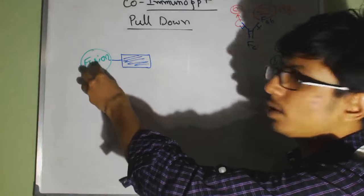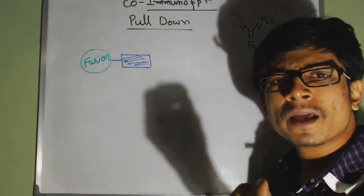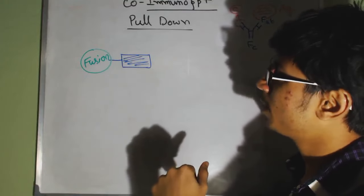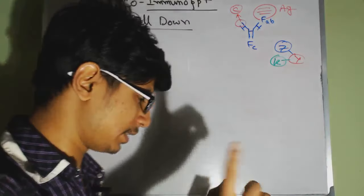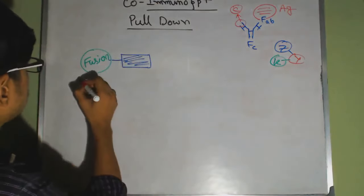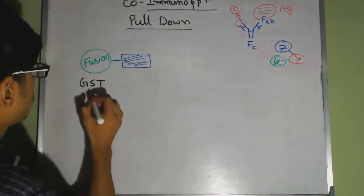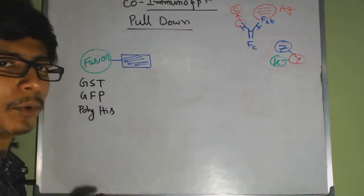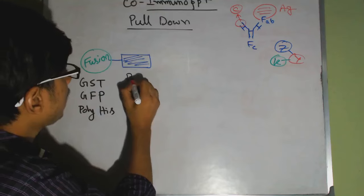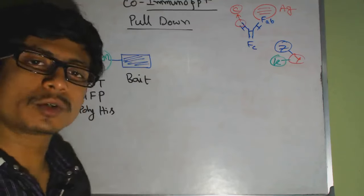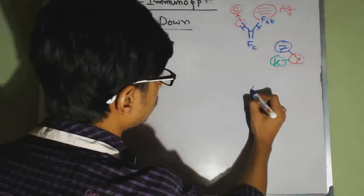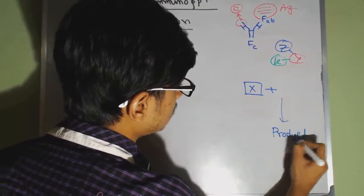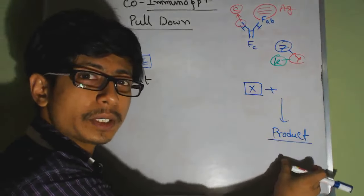After precipitation and gel electrophoresis, we can detect the proteins due to the tag on the fusion protein. Tags can be radioactive labels, fluorescent tags like GFP (green fluorescent protein), or biochemical tags like GST (glutathione S-transferase) or polyhistidine. These different tag molecules are attached to the bait protein and allow detection of co-precipitated proteins.